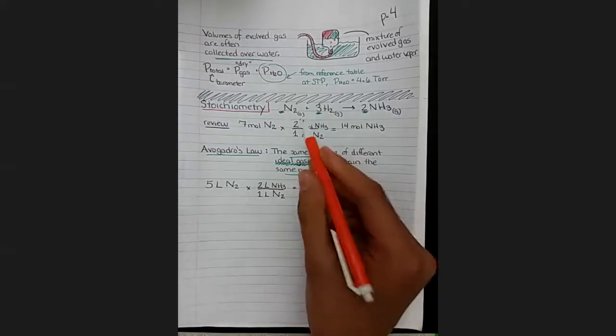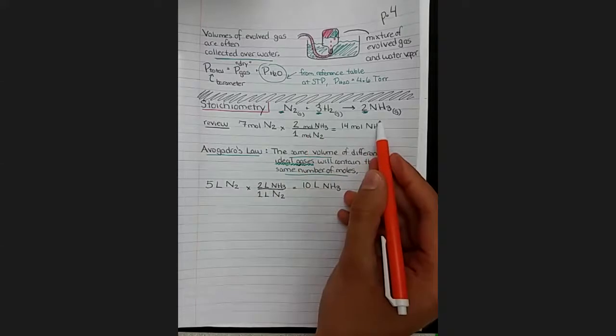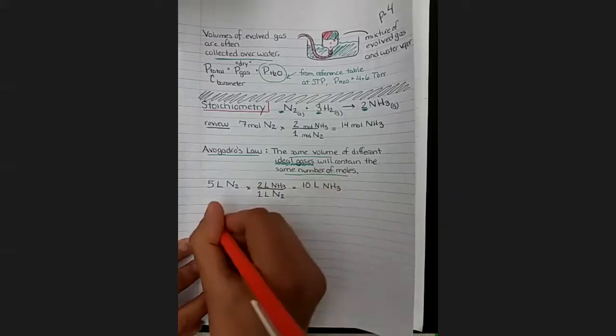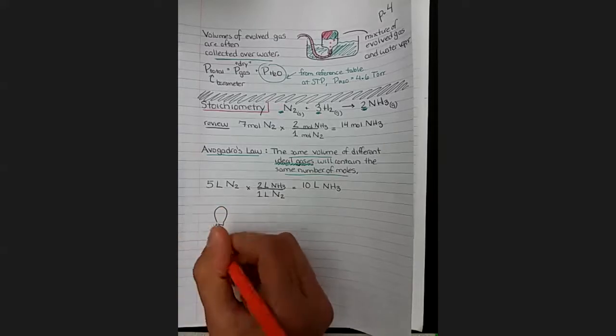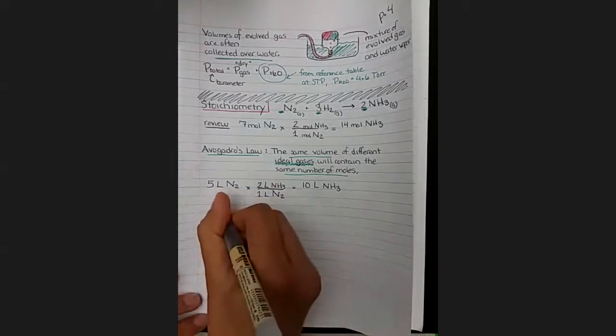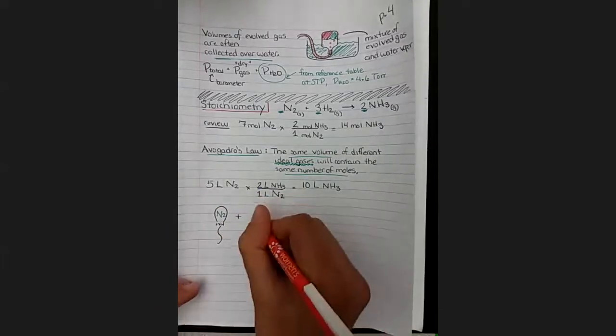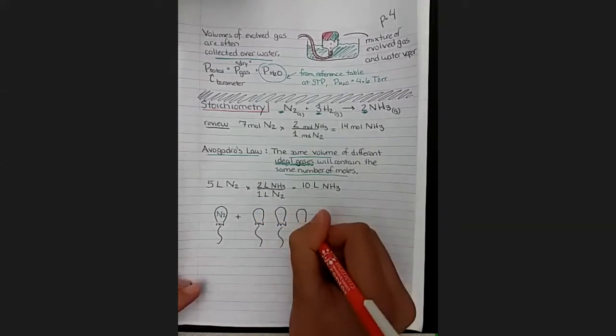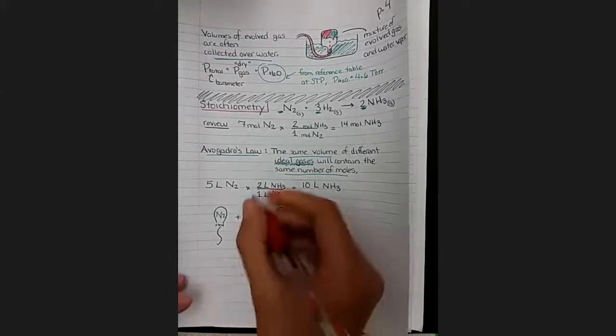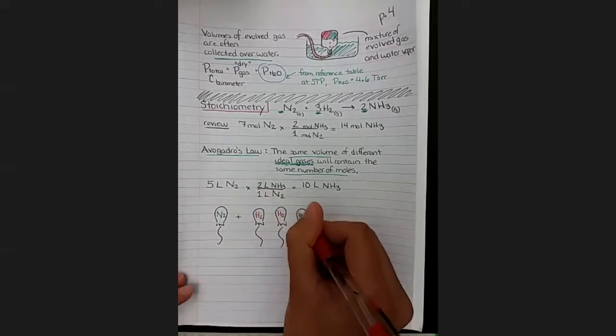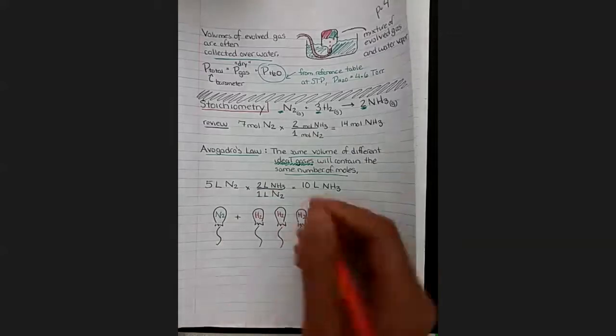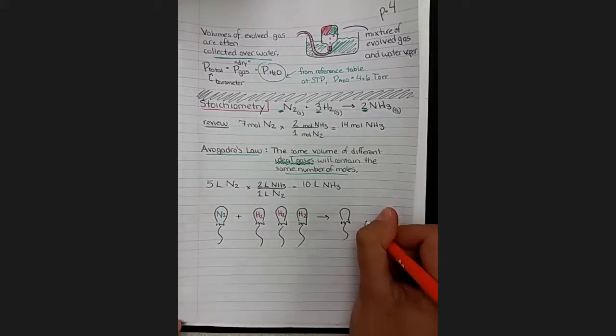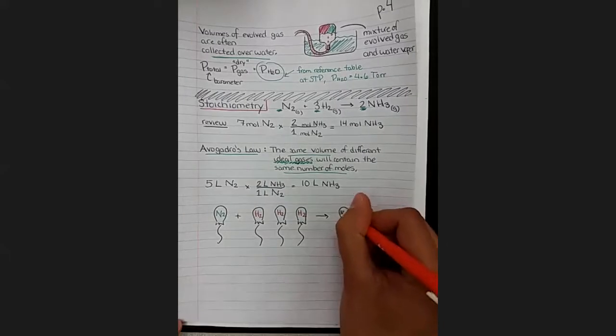You will need to check and make sure that all of the components of the reaction are gases or this doesn't apply. This works because we know that one mole of any gas will take up the same amount of space. If we have one mole of nitrogen, it's going to be one third of the volume of hydrogen that's needed. So three balloons worth of hydrogen and one balloon worth of N2. That's the same amount of gas of two balloons of NH3.